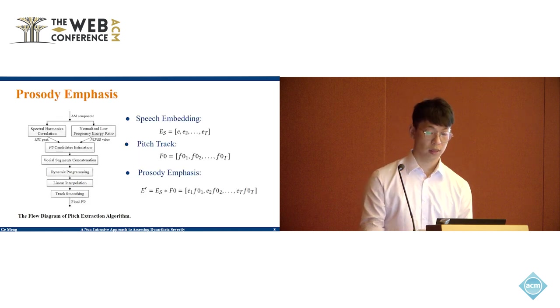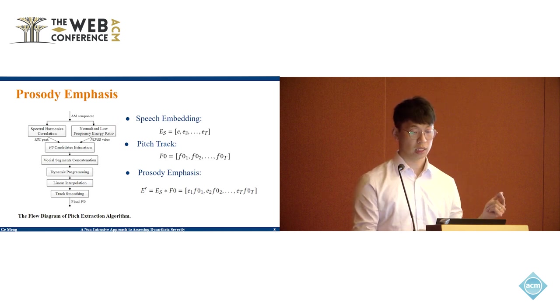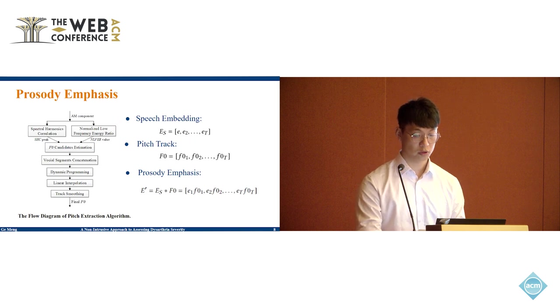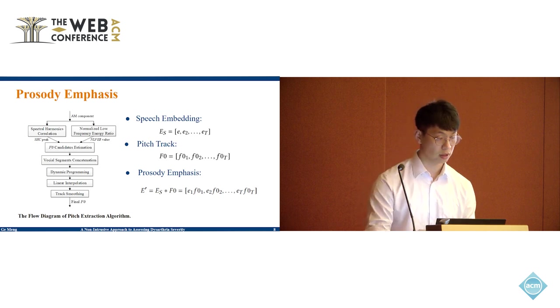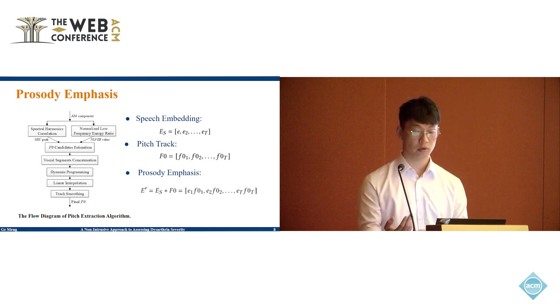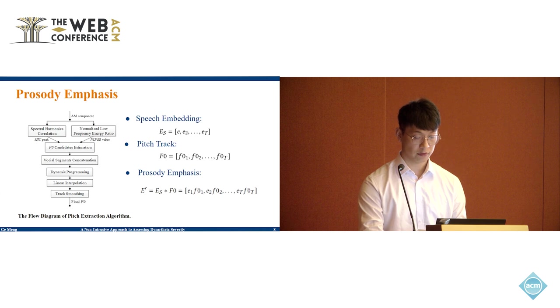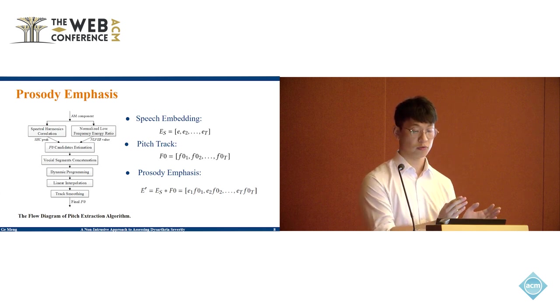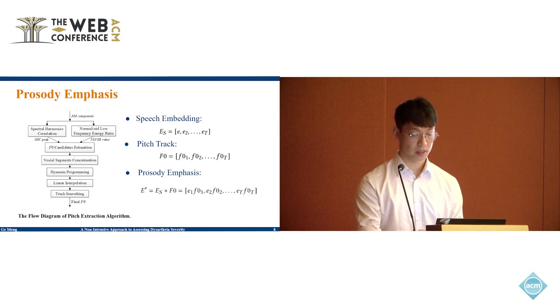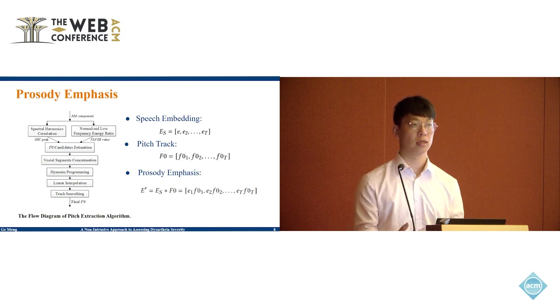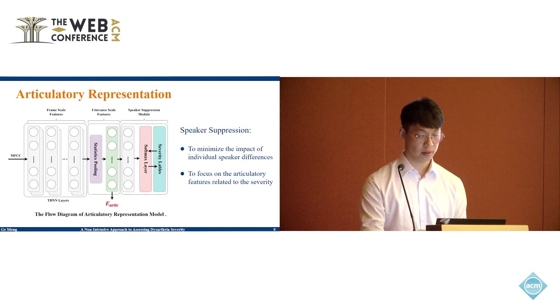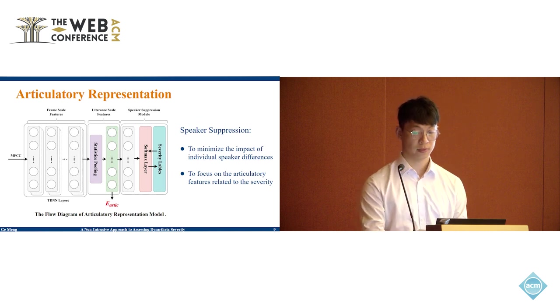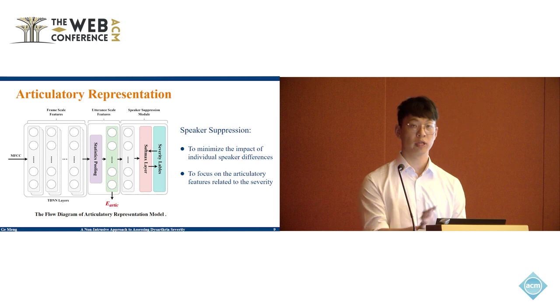The first part is on the frame level. We start by getting the speech embedding for each frame using a convolution module. Next, we use a combination of spectral harmonic calculation, normalized low-frequency energy ratio, and dynamic programming to extract reliable pitch tracks. Finally, we use the pitch value from each frame as a weight to adjust the corresponding speech embedding. This emphasized speech embedding helps to highlight the irregularities in stops and tones that are typical of disordered speech.